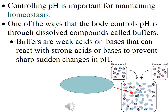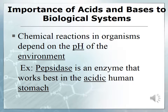Controlling pH is important for maintaining homeostasis. Make sure you click on the video link about homeostasis. One way the body controls pH is through dissolved compounds called buffers — weak acids or bases that prevent strong, sudden changes in pH. Chemical reactions in organisms depend on the pH of the environment. An example is Pepsinase, an enzyme (identified by the -ase ending) that works best in the acidic human stomach.